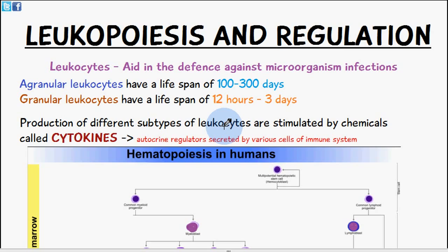Welcome to Five Minute School. Today's video we're going to be talking about white blood cell production, which is otherwise known as leukopoiesis, and we're also going to be talking about its regulation. White blood cells, otherwise known as leukocytes, have the role of aiding the defense against microorganism infection — it's the body's mechanism of defending against some form of microorganism infection.